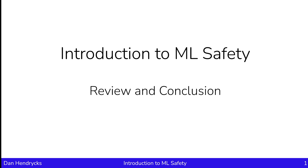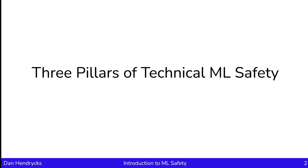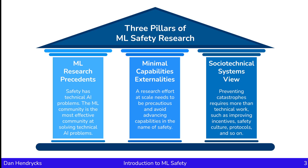In this lecture, we'll review and conclude the course. We'll review some of the technical ideas behind machine learning safety by way of three pillars. Here are the three pillars of machine learning safety research: machine learning research precedents, minimal capabilities externalities, and the socio-technical systems view, which is that preventing catastrophes requires more than technical work.